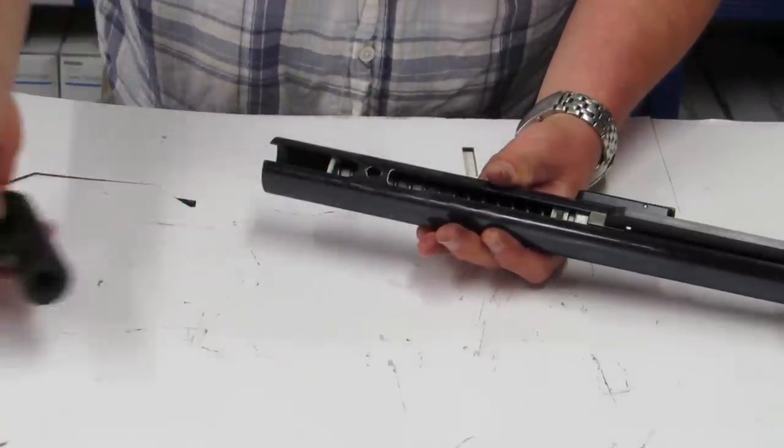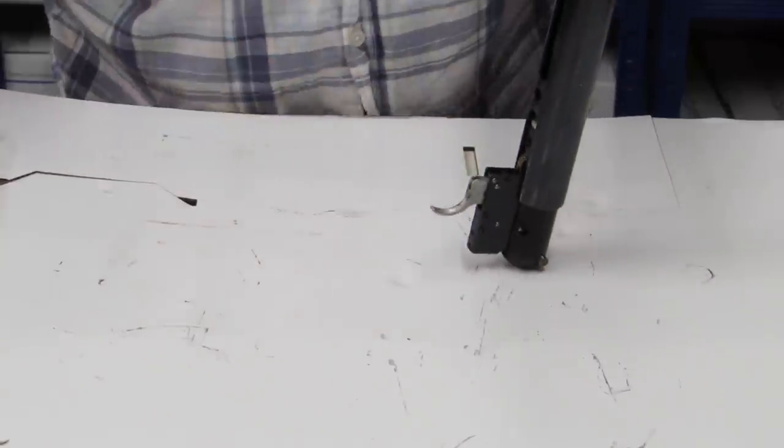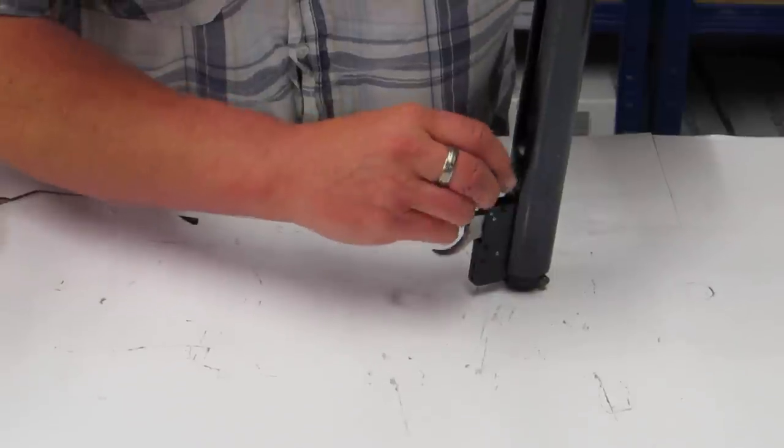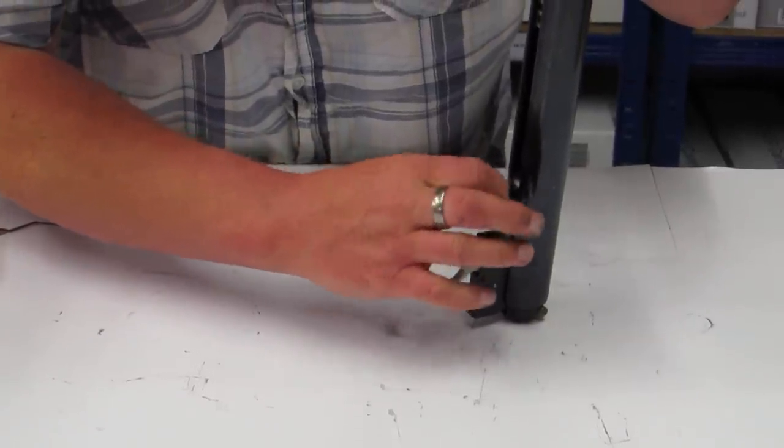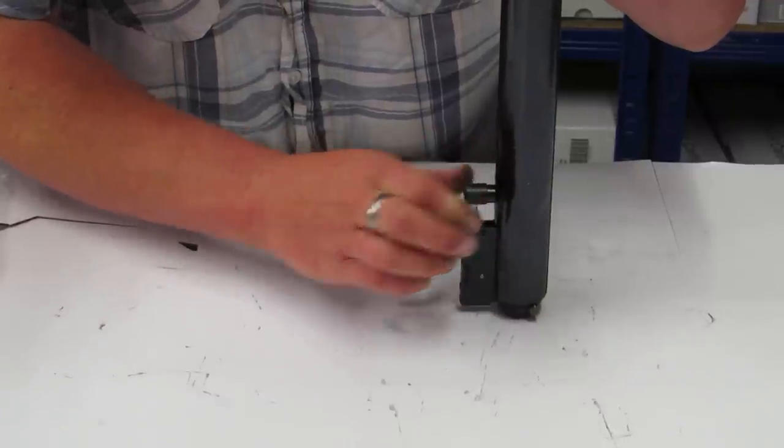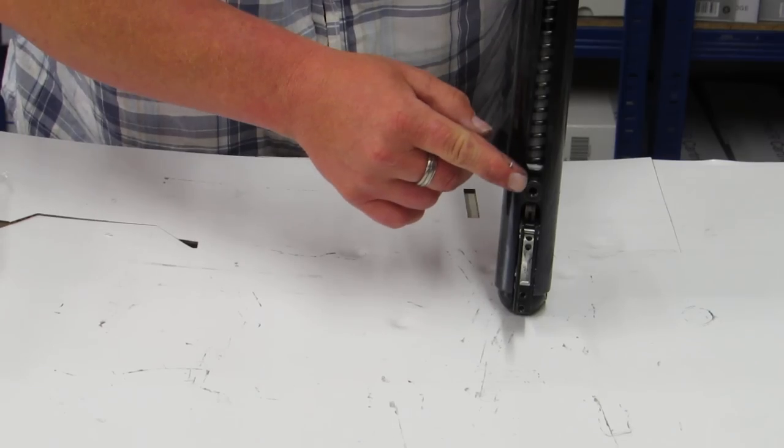Then we get the trigger block back onto there, back onto our hard surface, apply some pressure and that does up. It wants to be facing vertically on the flaps there